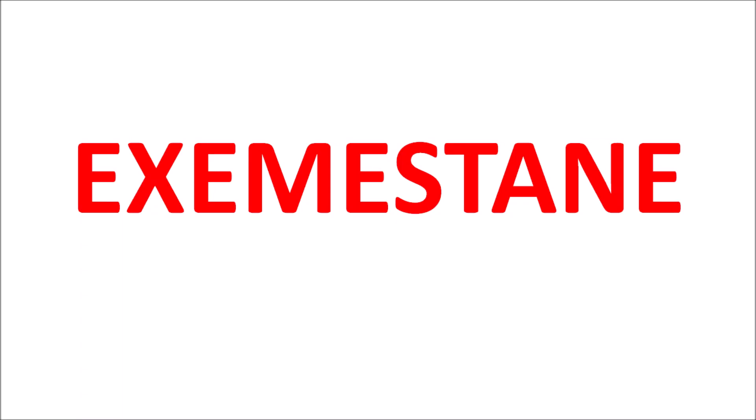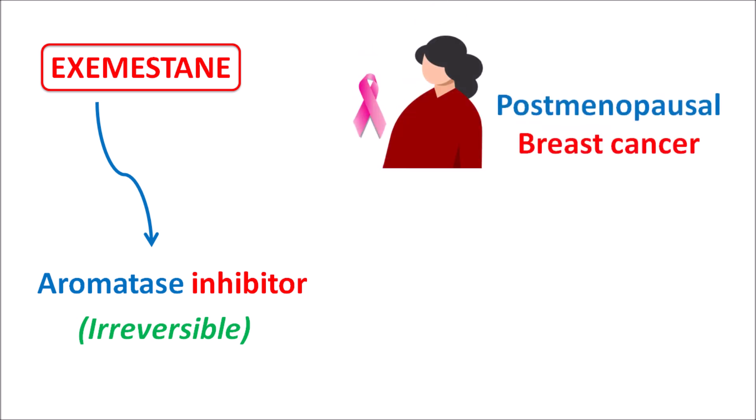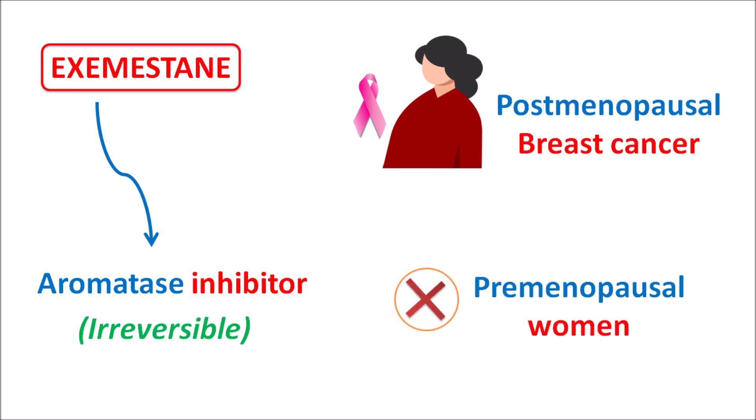Today we will talk about exemestane. Exemestane is a drug classified as an aromatase inhibitor, and particularly it is an irreversible inhibitor of the enzyme aromatase. This drug is used in the treatment of postmenopausal breast cancer, but it is not indicated for the treatment of breast cancer in premenopausal women, because the aromatase enzyme is more significant in postmenopausal women compared with premenopausal women.